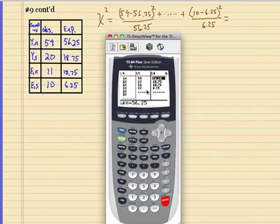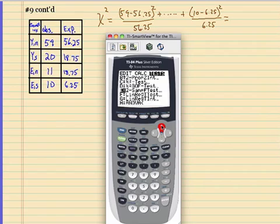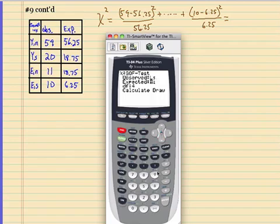I have my data in L5 and L6 on the stat. So I have my observed in L5, second 5, and I have my expected in L6. See if you can do the degree of freedom.